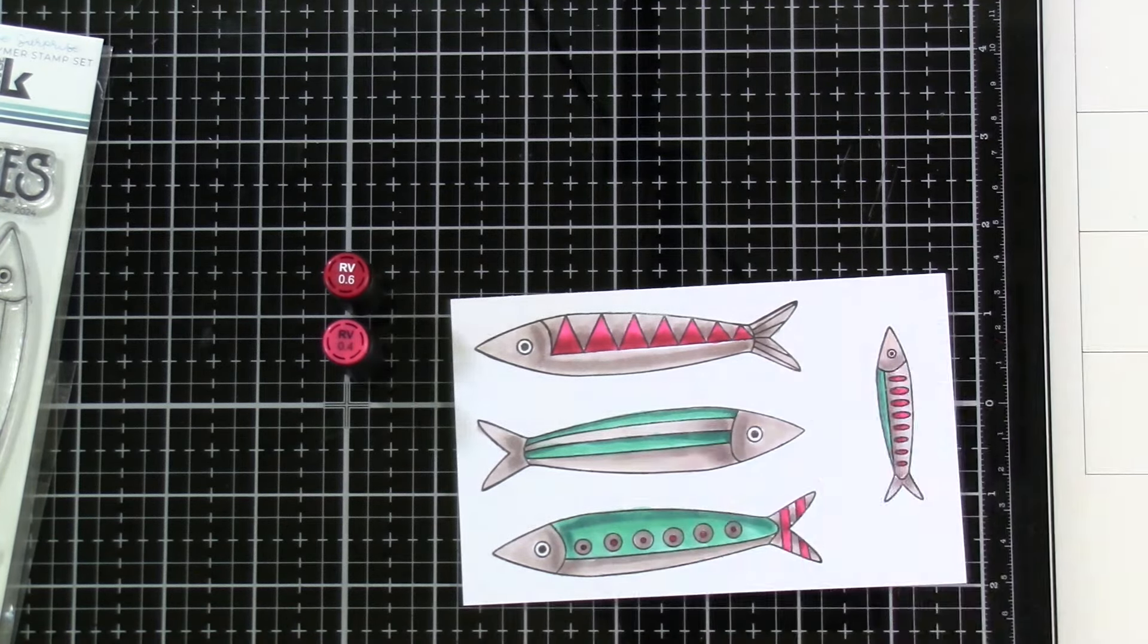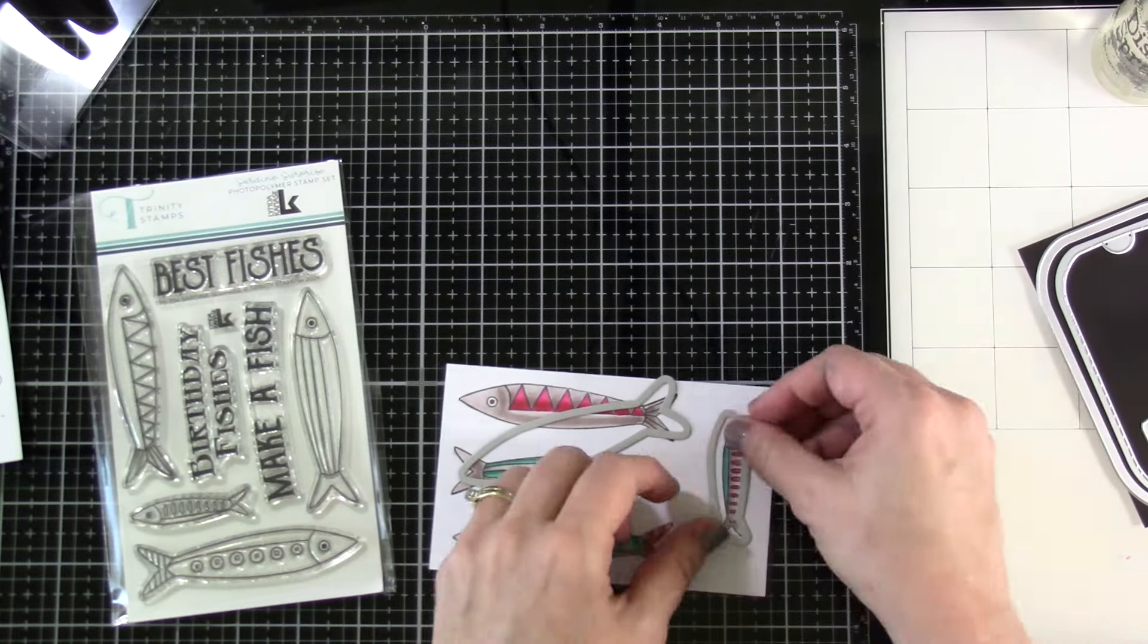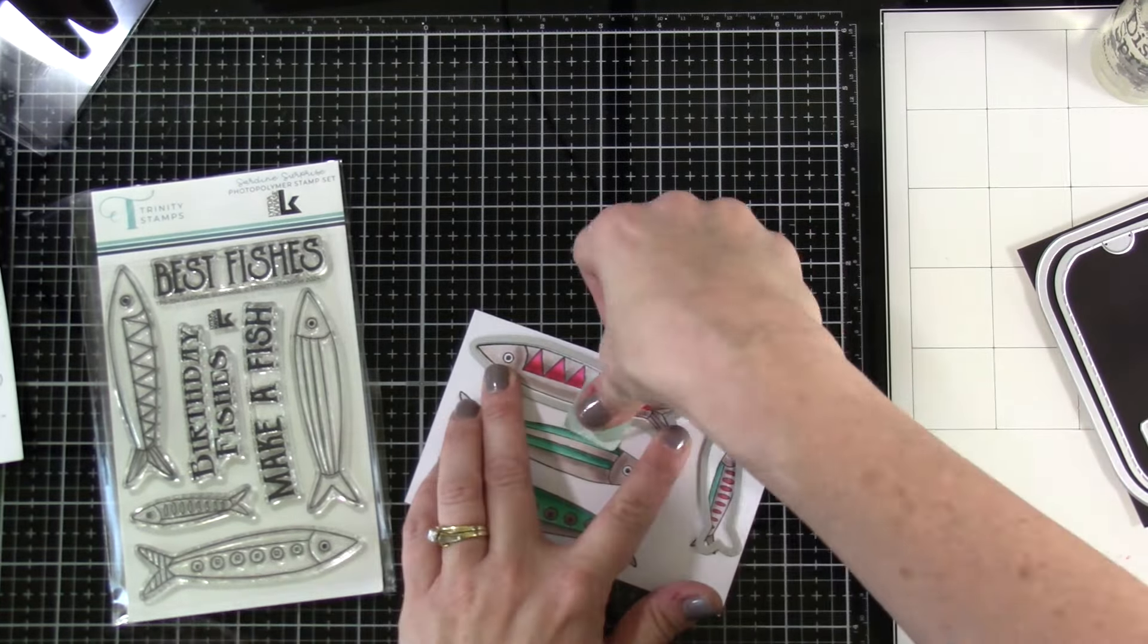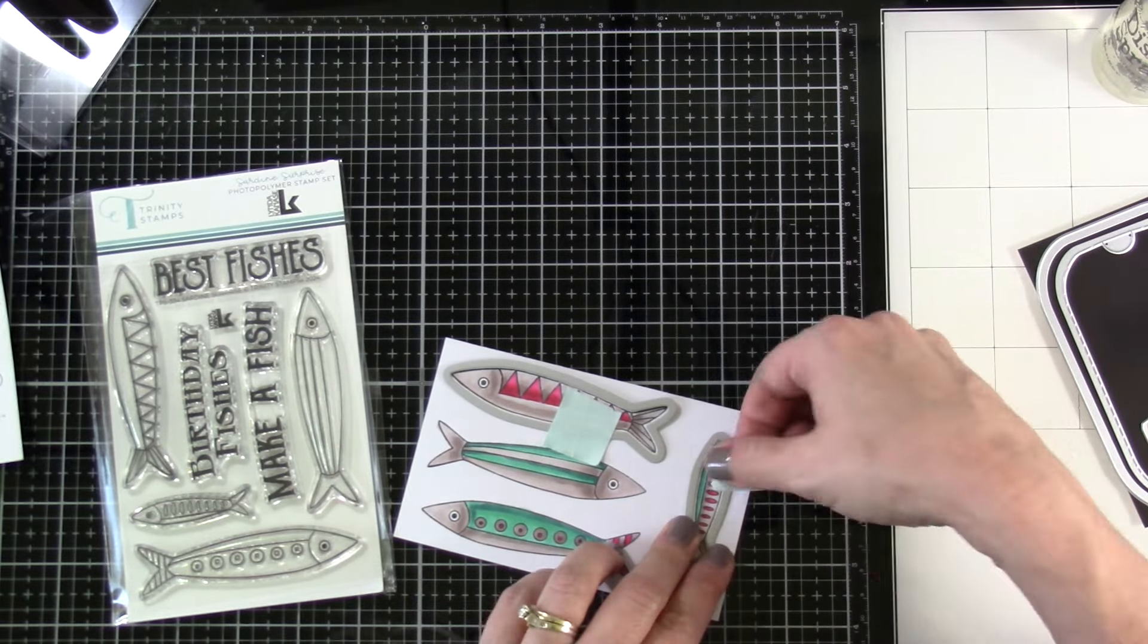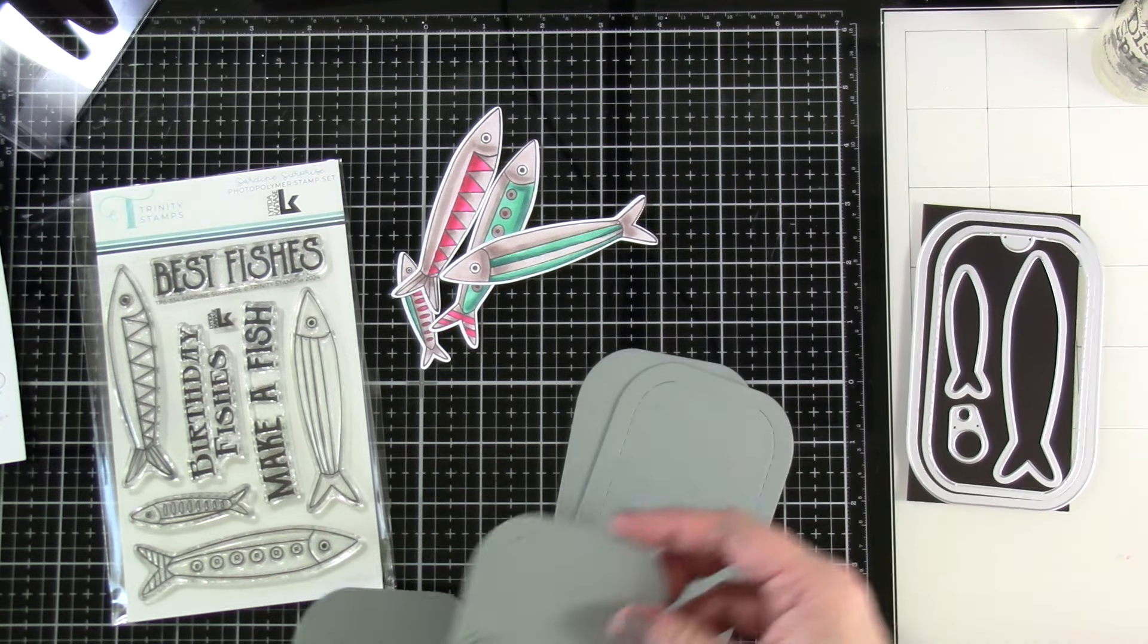Then we'll move on to using the matching dies because there are two fish dies. The big die will obviously work for all three of those big fish and then we'll have the little fish die. Once I get those dies tacked down with a little bit of mint tape we'll run that through our die cutting machine and we'll cut out all the rest of them as well.